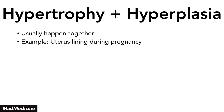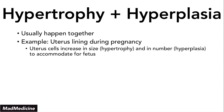An example of hypertrophy and hyperplasia happening together is the uterus during pregnancy. The uterine lining undergoes both hypertrophy and hyperplasia at the same time because the uterus increases in size and also increases in the number of cells in order to accommodate for the fetus. This is again a physiologic response, not pathologic. The majority of the time in our body, hypertrophy and hyperplasia are happening together.